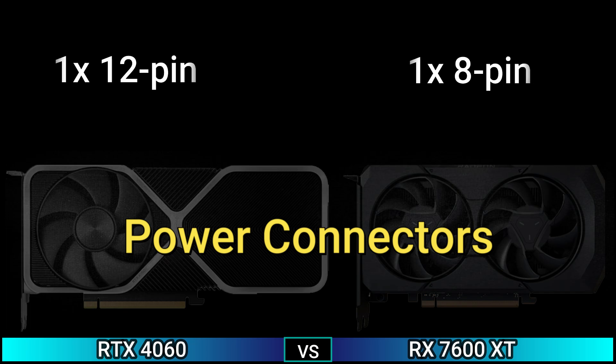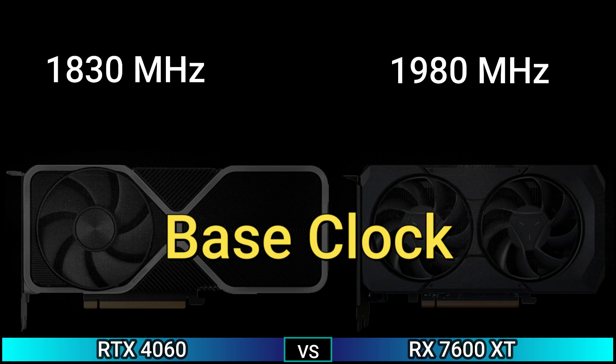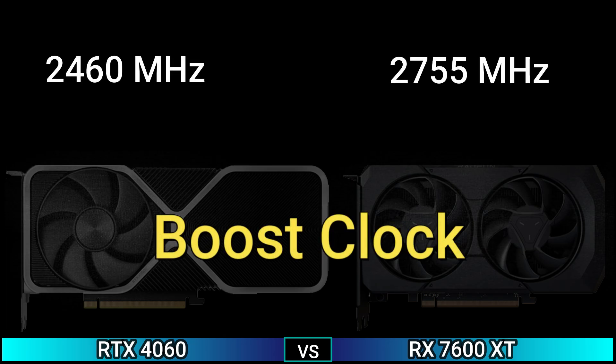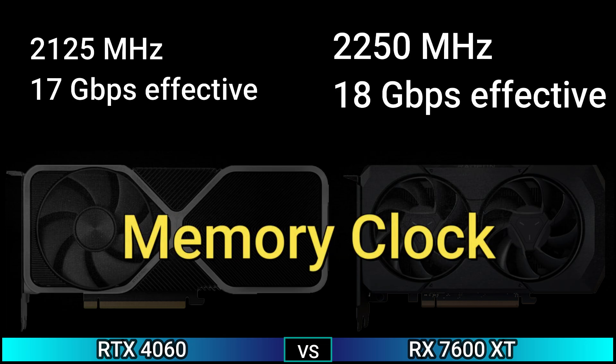Power connectors: 1x 12-pin and 1x 8-pin. Performance: base clock 1830 MHz and 1980 MHz. Boost clock 2460 MHz and 2755 MHz. Memory clock 2125 MHz (17 GB/s effective) and 2250 MHz (18 GB/s effective).